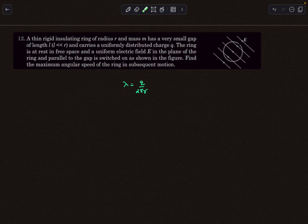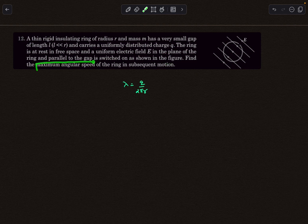The ring is initially at rest in free space and a uniform electric field E is in the plane of the ring and parallel to the gap. The electric field is in the direction of the gap length l, and when the electric field is switched on we have to figure out the maximum angular speed of the ring in the subsequent motion. Give this problem a try, then check out the solution.